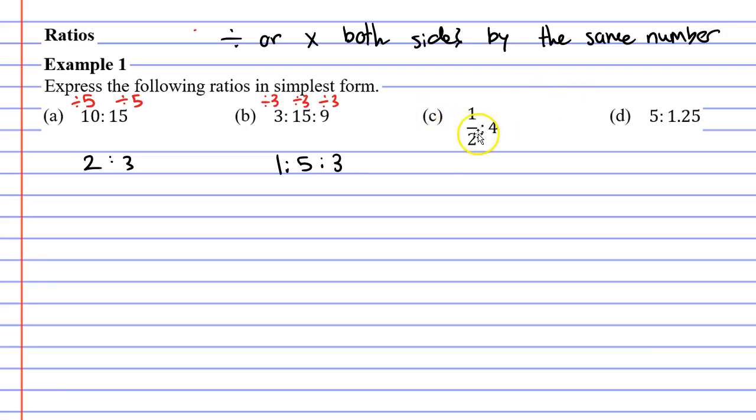We're now going to move on to question C, and we've got a bit of an issue here because we've got a fraction, and when we simplify ratios, we don't want fractions, and we don't want decimals, we want just whole numbers. So what I'm going to do is I'm going to times by 2, because I know that if I times a half by 2, it's going to actually turn it into a whole number. So a half times 2 actually gives me the number 1, and 4 times 2 gives me the number 8.